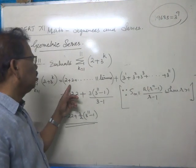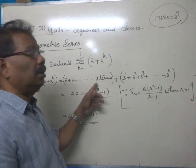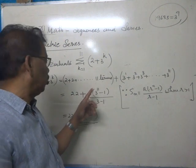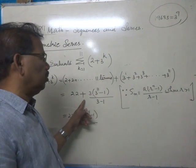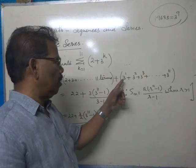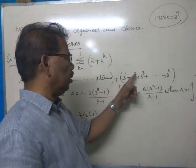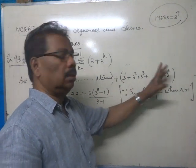2 plus 2 plus 2, etc. up to 11 times is 2 into 11, that is 22, plus 3 raised to 1, 3 squared, 3 cubed, etc. up to 11.